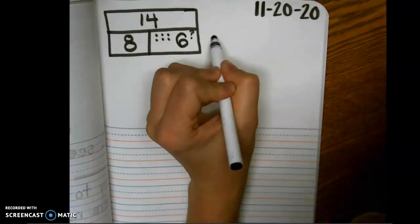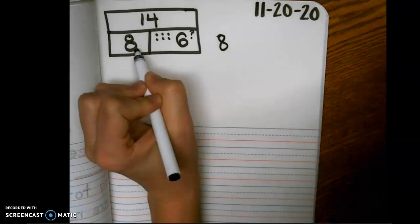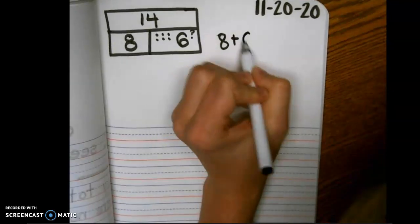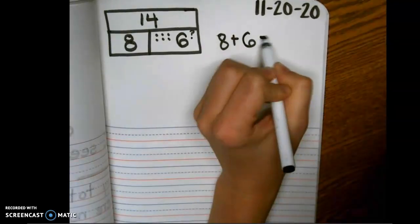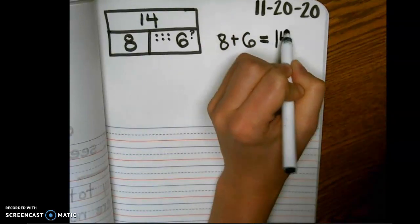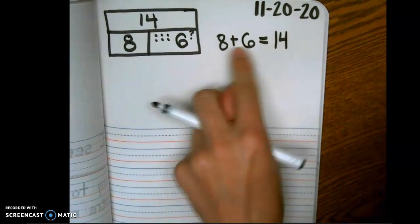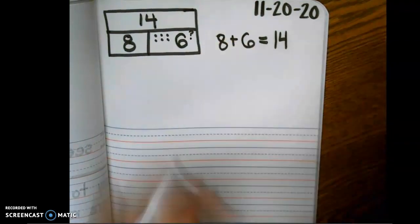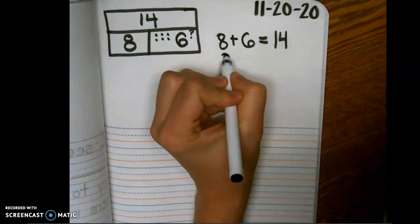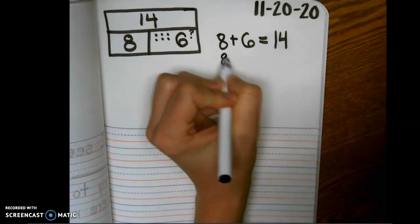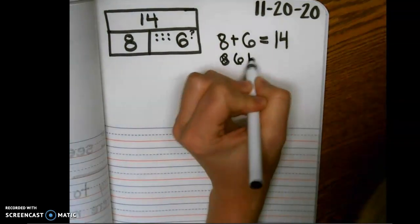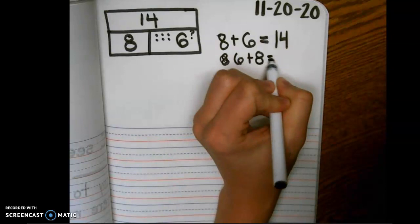First we're going to add our two parts to equal our whole, so we would take 8 plus 6 equals 14. Well then we would switch them, right? Because it doesn't matter which number comes first, they both equal 14. So then I could write 6 plus 8 equals 14.